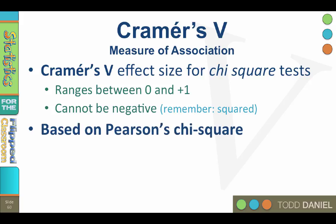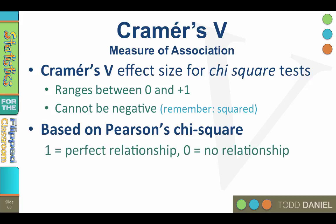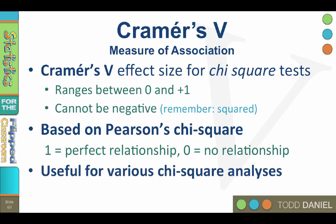Cramer's V is based on the Pearson chi-square statistic, where positive 1 equals a perfect relationship and 0 equals no relationship. What makes Cramer's V so useful is that it can be used with various chi-square analyses, from a simple one-way chi-square up to any number of rows and columns.